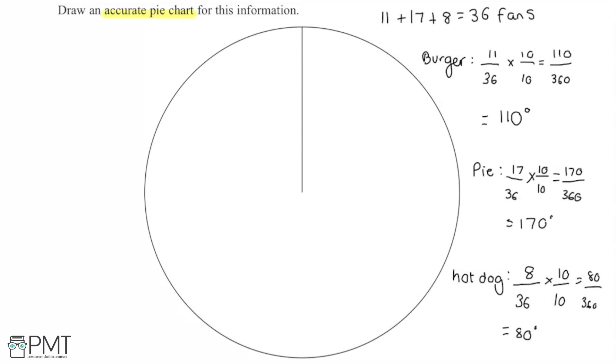Now I can just check that these are going to work out. If I take the 110, add on the 170 and add on the 80, we're expecting this to sum to 360 degrees because it's going to be the complete circle and it does in fact sum to 360 degrees so we know that our angles work out here.